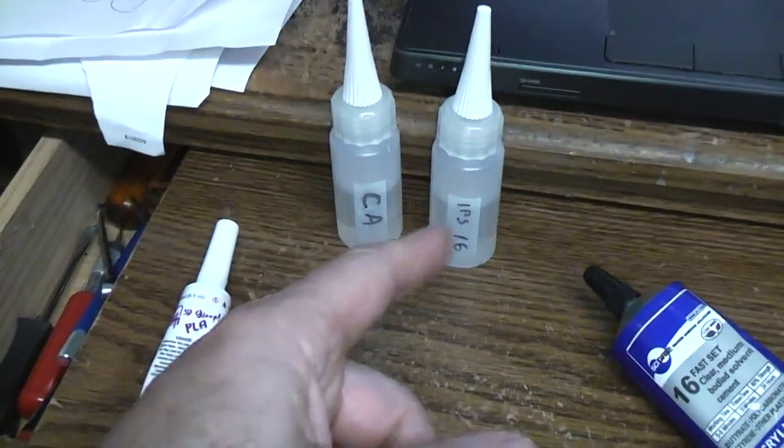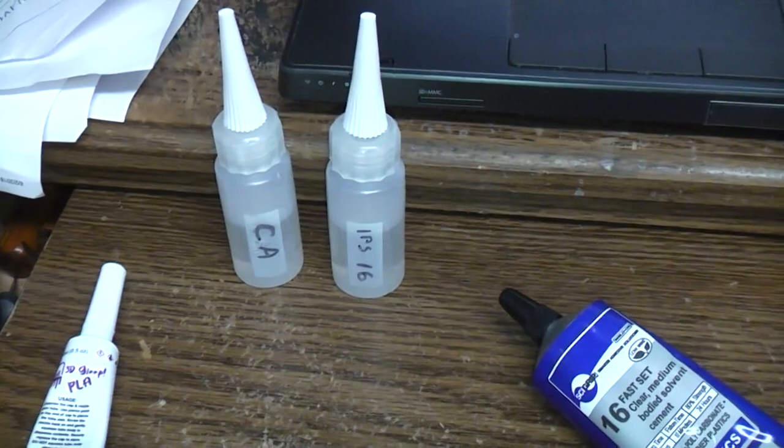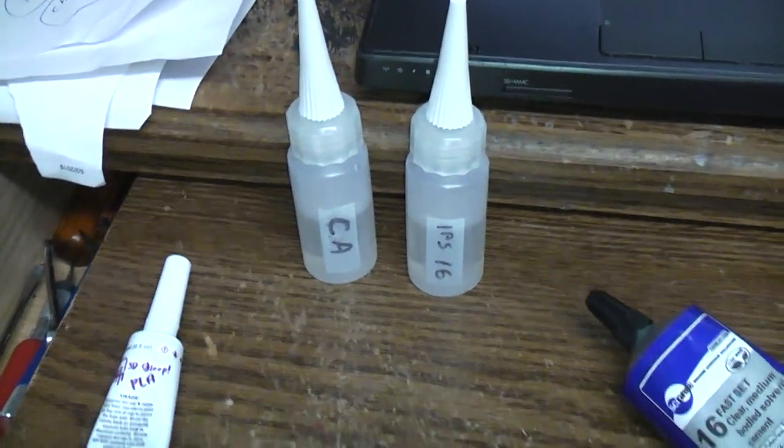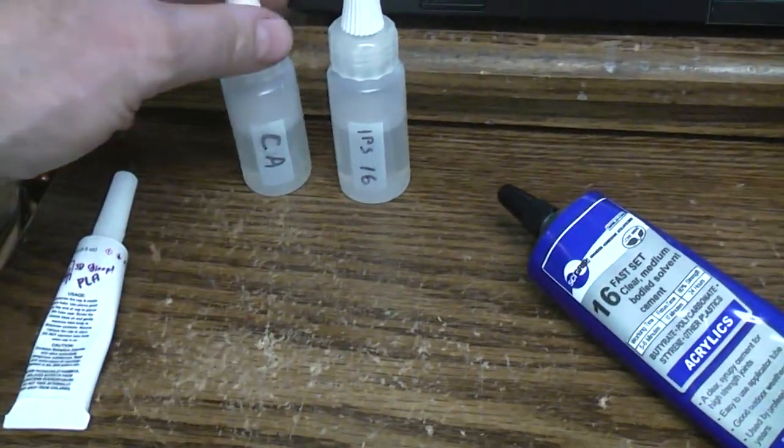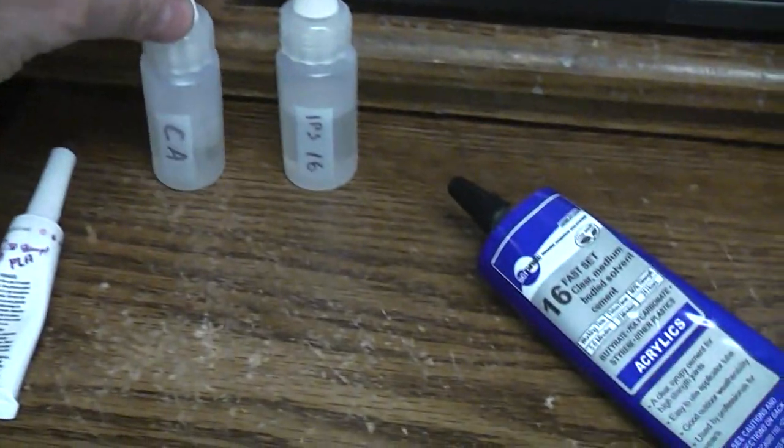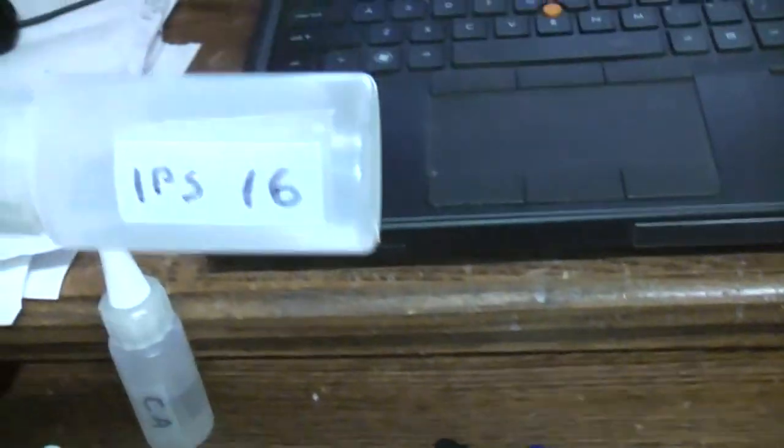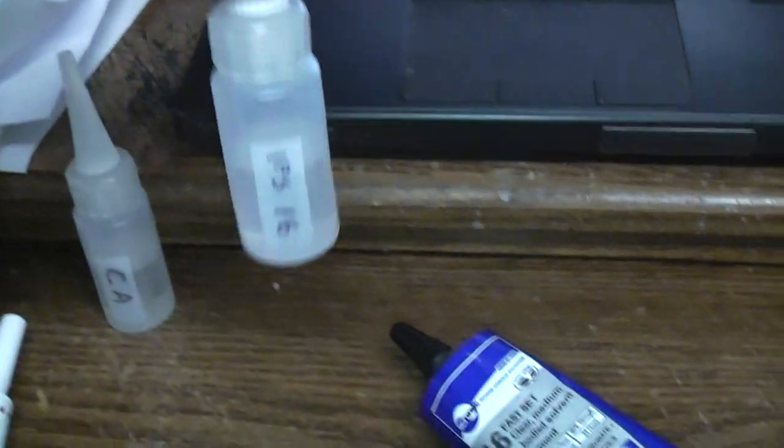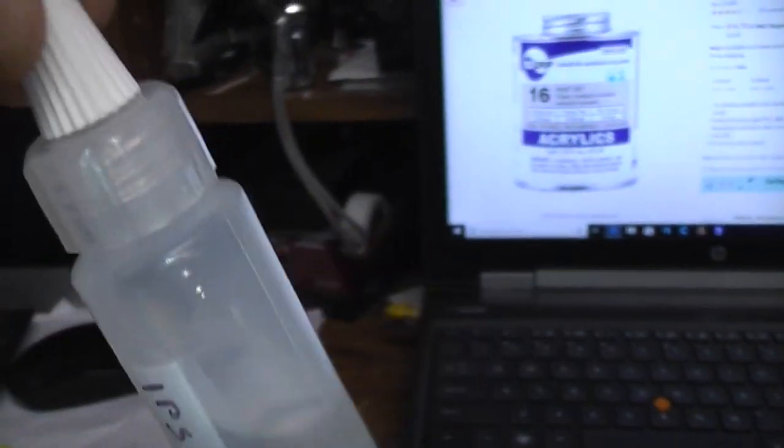I got six of these bottles for less than five bucks and that was shipped. In one I keep my thick CA glues and in the other one right now I've got the Weldon 16. In case you wanted to see how thick or thin it was, you can kind of see it sloshing around.